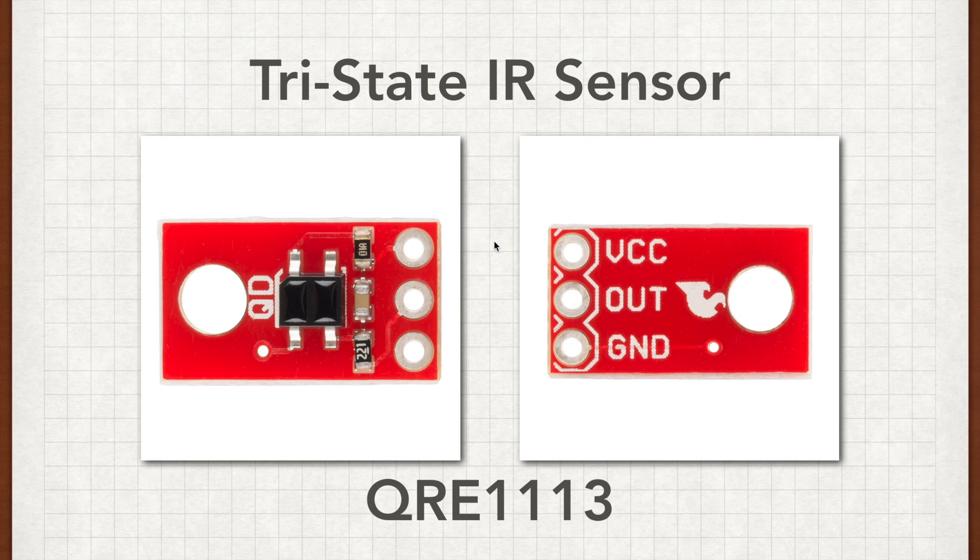So this is the QRE1113 sensor. This actually comes out on a breakout board. You can buy the sensor itself, but it's best to just buy the breakout board. The circuit diagram you'll see next will show basically just what's on this breakout board. So you basically just have to give it power, VCC, ground, and then you have this out, which is an input-output pin. So you have to trigger the device, and then you listen to the device.